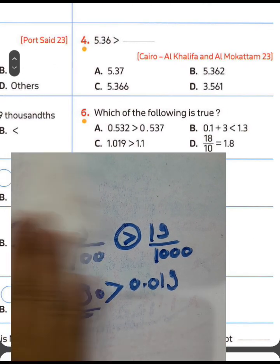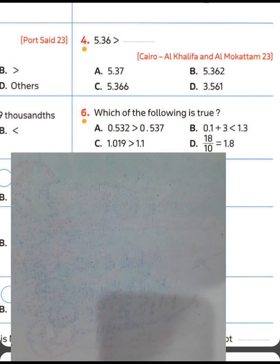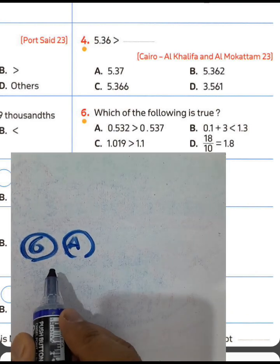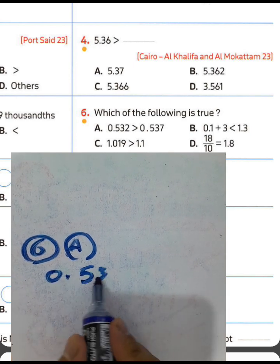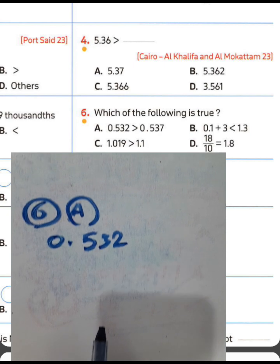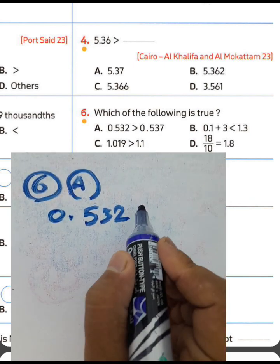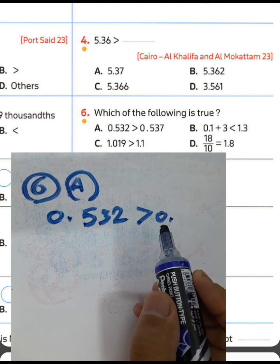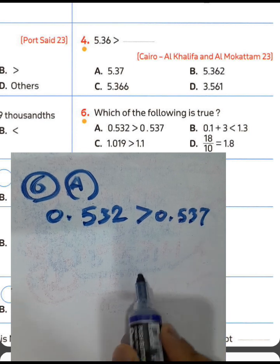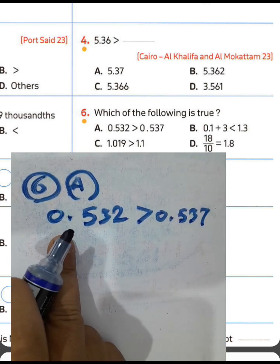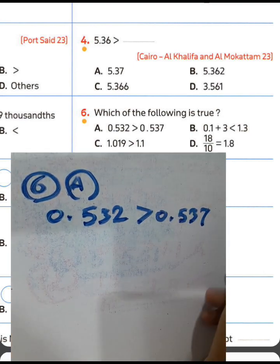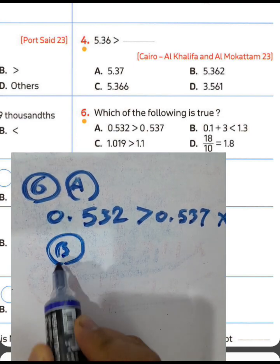Question number six: which of the following is true? Letter A: 0.532 compared to 0.537 — look here: 0 equals 0, 5 equals 5, 3 equals 3, but 2 versus 7. It's false because 7 is greater than 2.